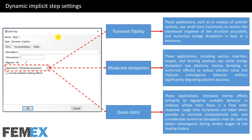Now I want to talk about Dynamic Implicit Step Settings. In the Basic tab, we must enter the Time Period. If the simulation is dynamic, we must enter the real value for time period, and the timing of the simulation is real. But if the simulation is quasi-static, we can enter an arbitrary value. Here we also have the NLGEOM setting that can be set to on or off.